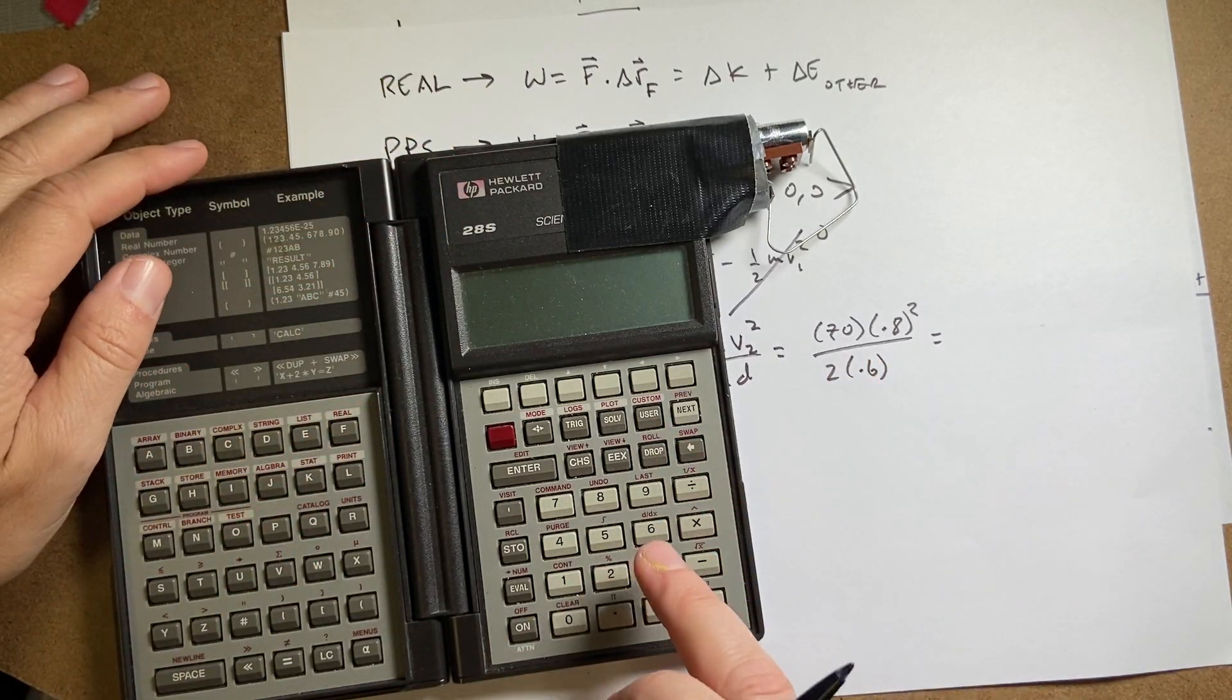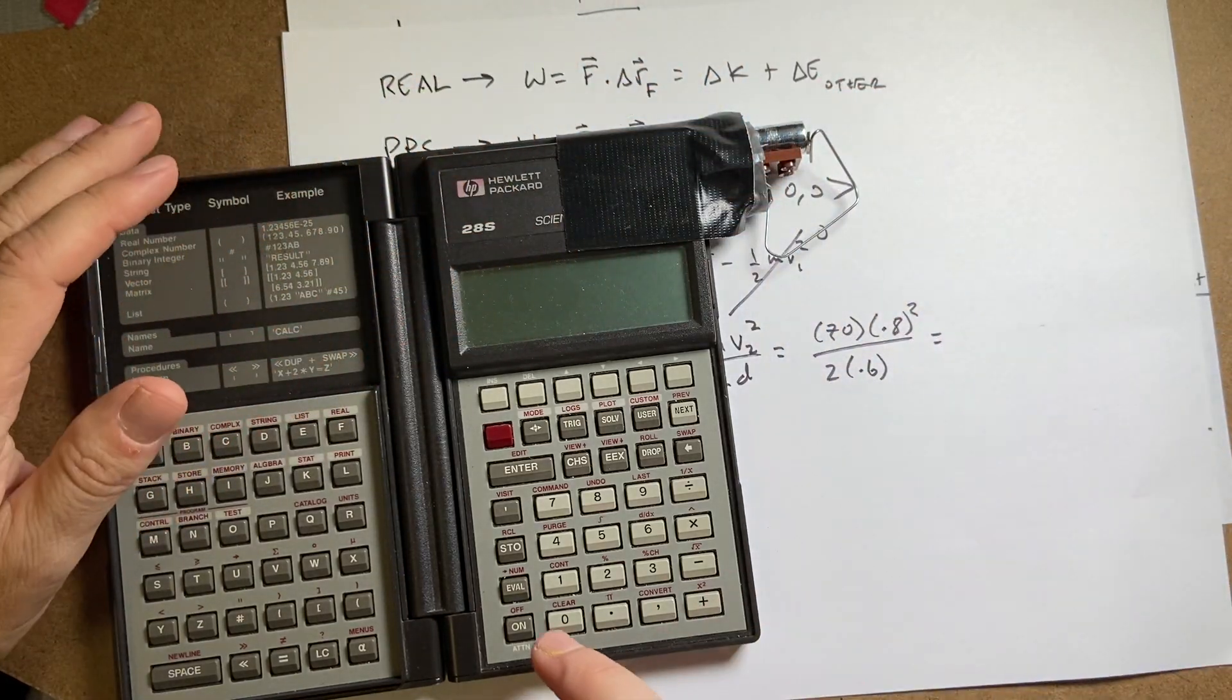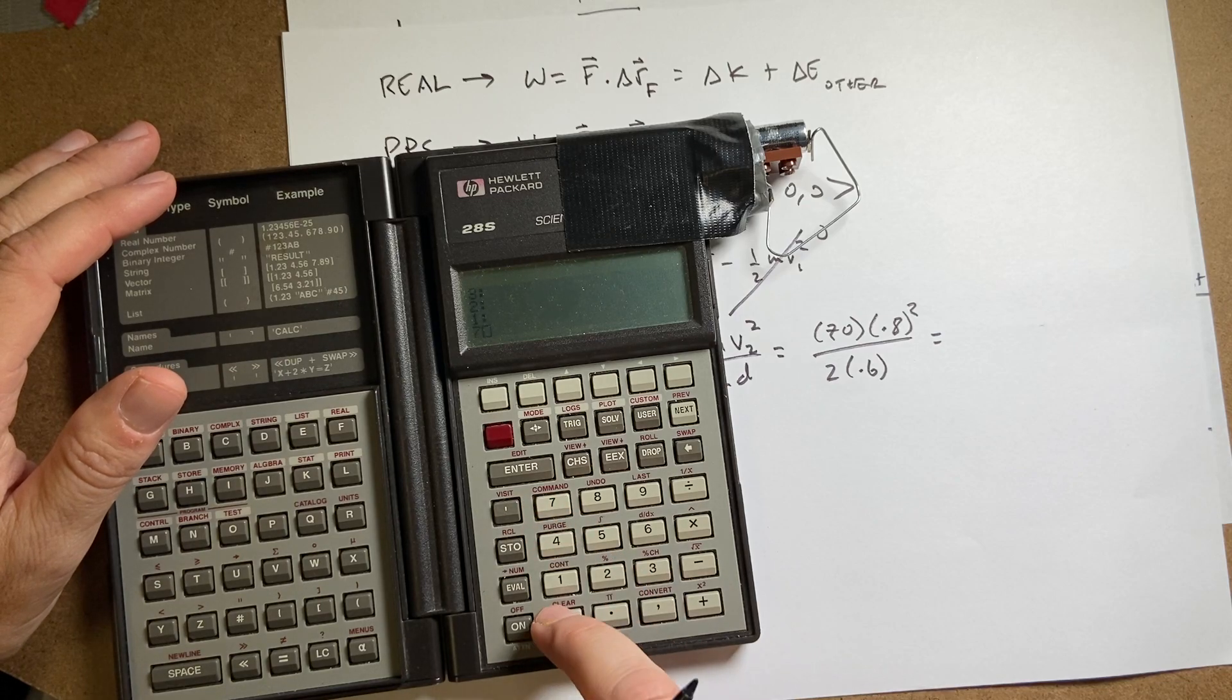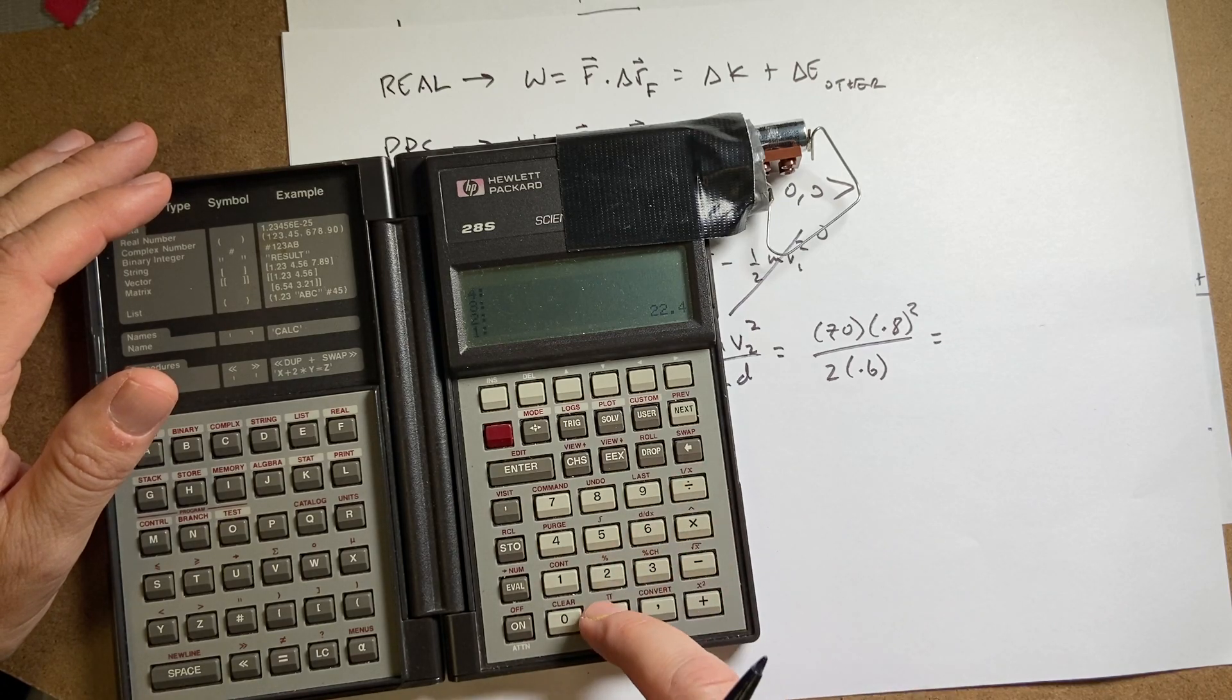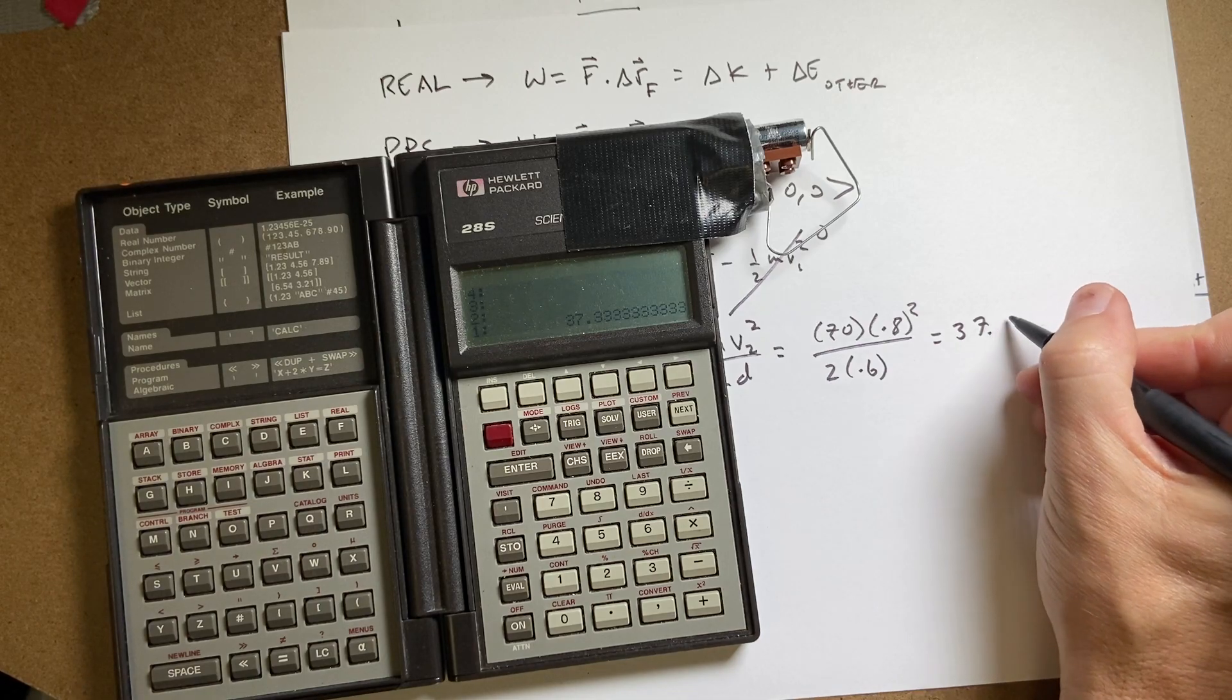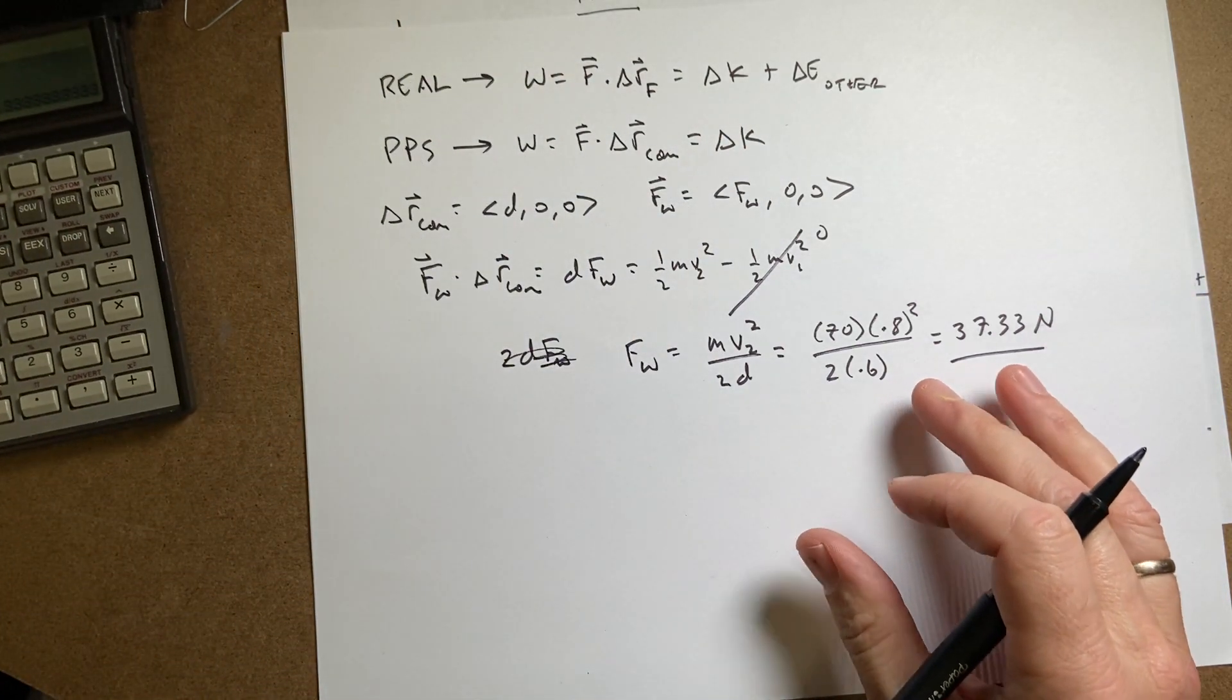Let's see if it turns on. Oh, it did turn on. Okay, so I get... Oh, it didn't turn on. Let's see. Push that down. There we go. Okay, 70 enter, 0.8 squared times 2 divided by 0.6 divided by. I get 37.33 newtons. So that's the work done by the wall.